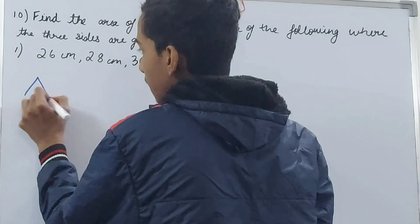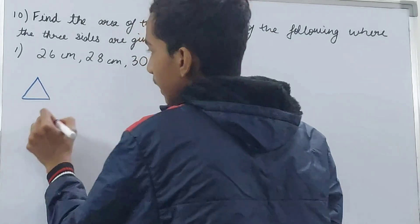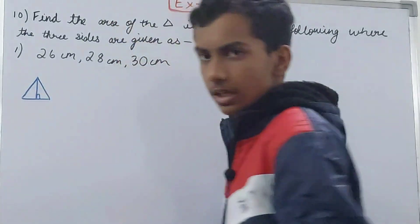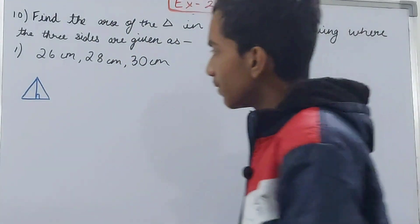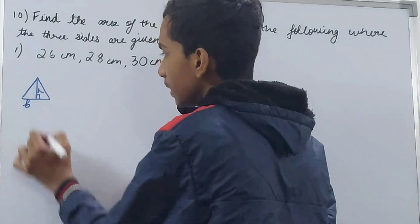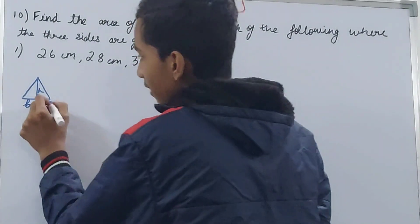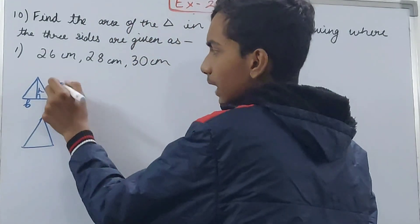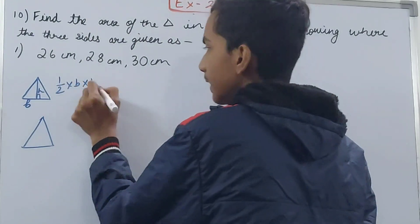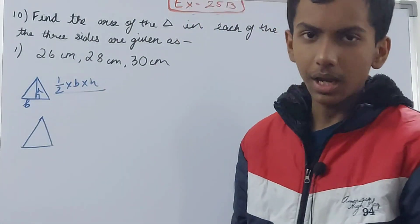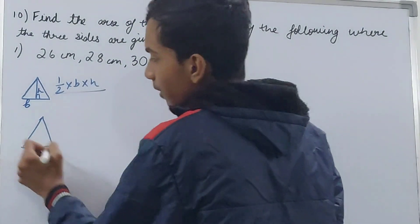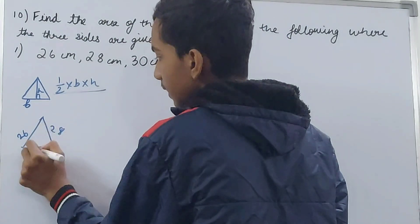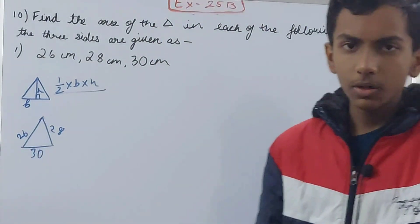Suppose this is my triangle. In this triangle, if the height and base are given, then for another triangle we can calculate the area easily using the formula: 1/2 × base × height. We've all studied this. But if I have a triangle with sides 26, 28, and 30 — no height is given.